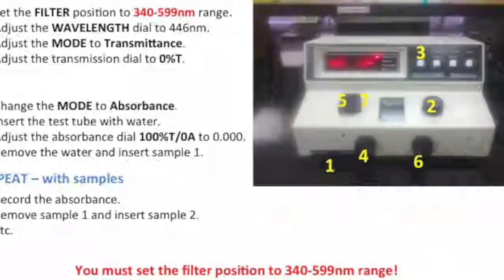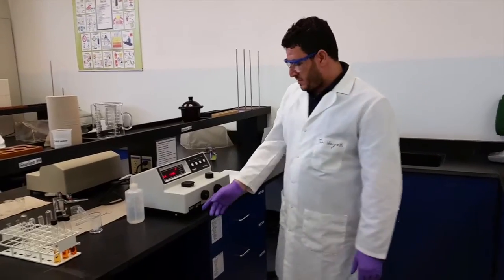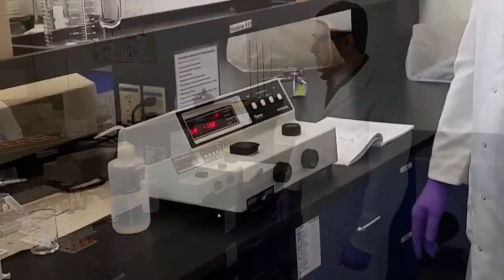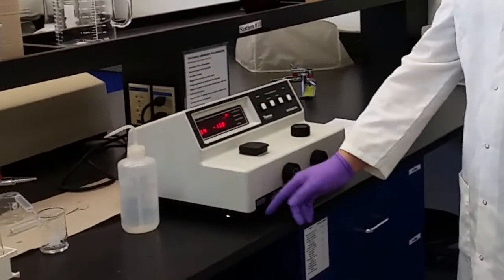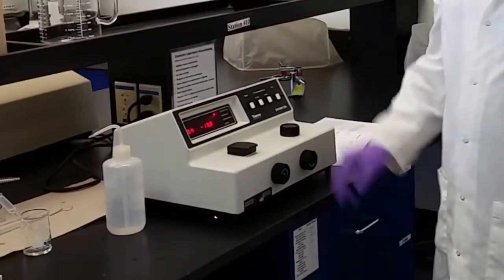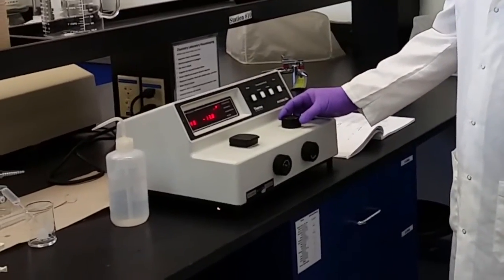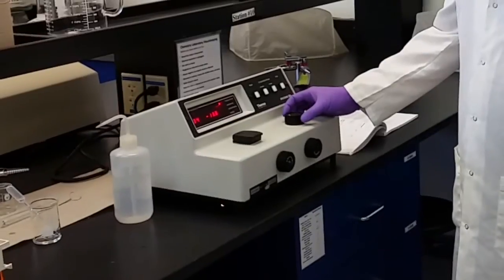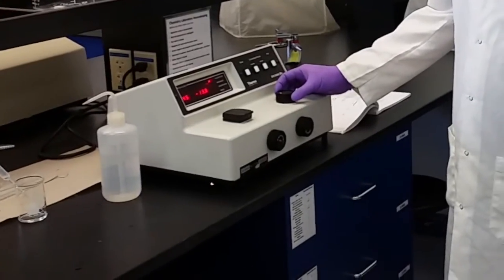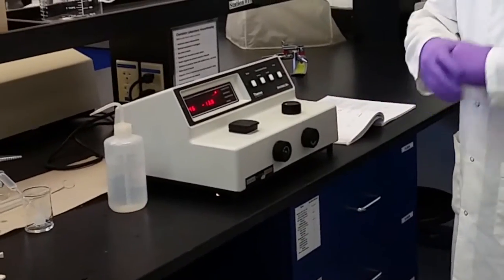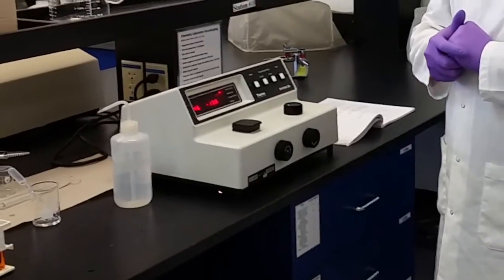You have a guideline on the screen, so just follow the steps. Set the filter position to between 340 and 599. Then set the wavelength to 446, which is the maximum wavelength of the iron thiocyanate complex ion.